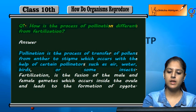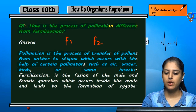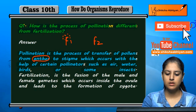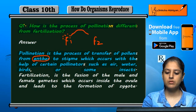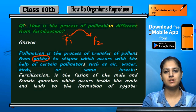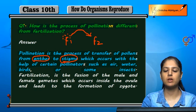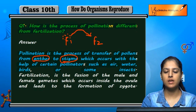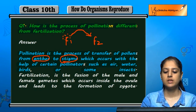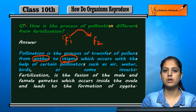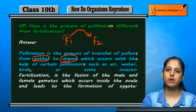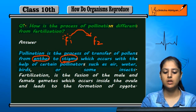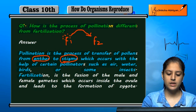For example, if there is flower one and flower two, there are some pollen grains on the anther. These pollen grains will transfer to the next flower onto the stigma. This transfer happens through pollinating agents or pollinators — air, water, birds, or insects carry them. This is pollination.